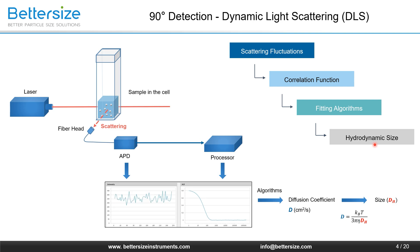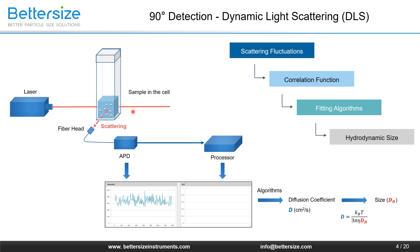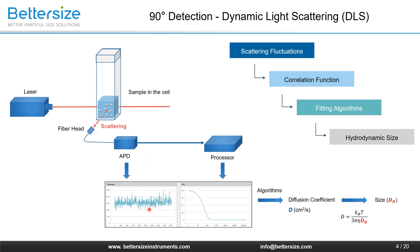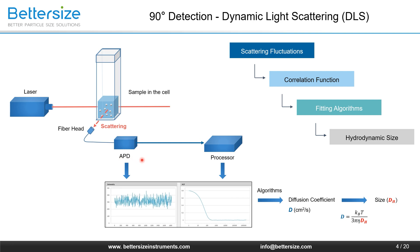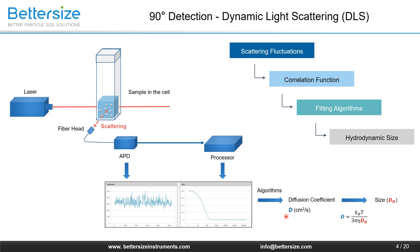In a conventional DLS analyzer, a coherent laser beam illuminates the uniformly dispersed nanoparticles in the sample cell, which scatter light in all directions. The scattering intensity fluctuates over time due to the continuous random Brownian motions of particles. The APD detector determines the number of photons in scattered light at 90 degrees, and the processor computes the sample's autocorrelation function. The diffusion coefficient is then calculated and used to give the hydrodynamic size through the Stokes-Einstein equation.